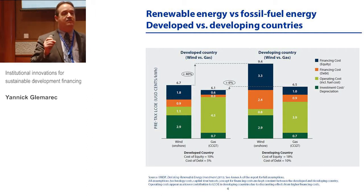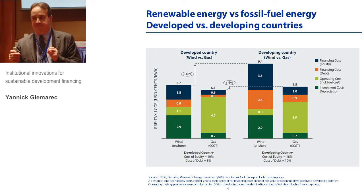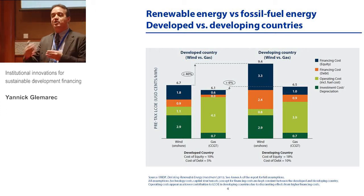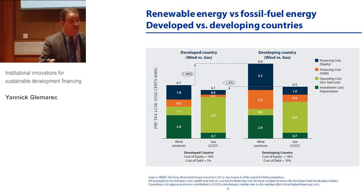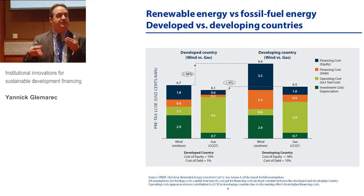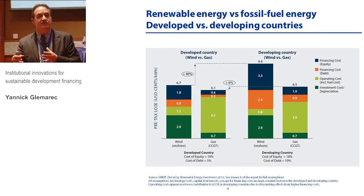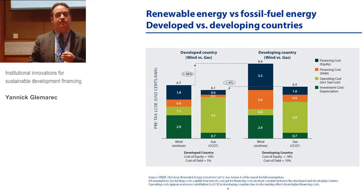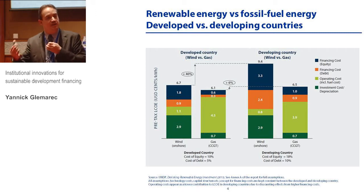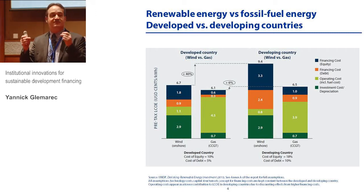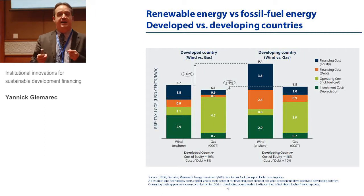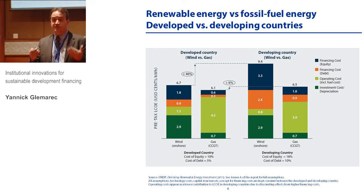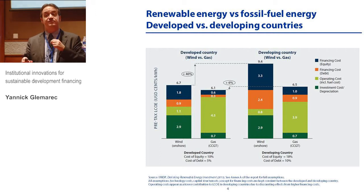The reason is risk — the level of actual and perceived risk. Financiers basically price risk. When they have the impression that there is a sovereignty risk, that there could be an expropriation, or that the technical skills of a country are not high enough to guarantee good operations, or that the wind survey was not robust — whenever they have the impression that there is a risk, they price it. So when you want to promote green technologies, one of the key things to do is to reduce investment risk and improve the risk-reward profile of green investment.